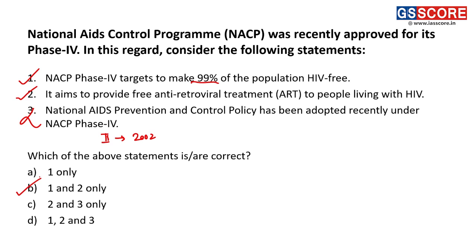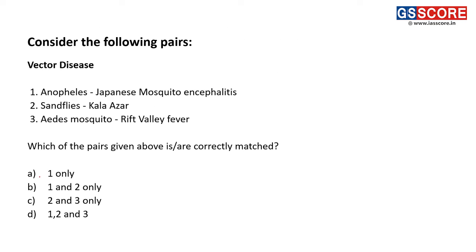Question number 5: consider the following pairs — vectors and their associated diseases. First pair: the Anopheles mosquito and Japanese Encephalitis. This is a correct pair — Anopheles mosquito is a vector for Japanese Encephalitis.